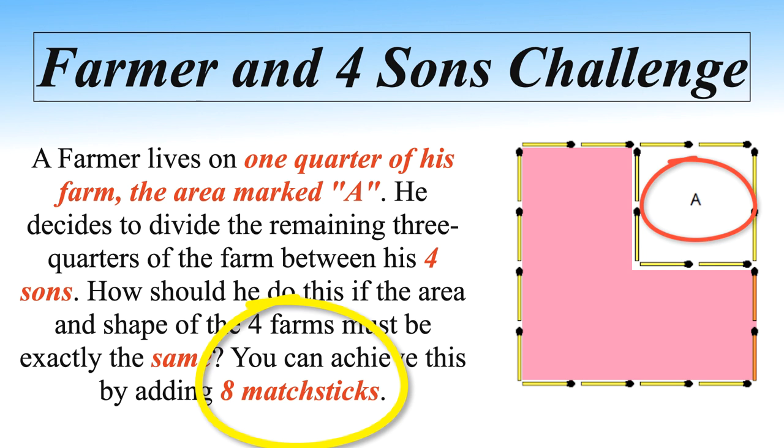Let me repeat the puzzle. A farmer lives on one quarter of his farm, the area marked A. He decides to divide the remaining three quarters of the farm between his four sons. How should he do this if the area and shape of the four farms must be exactly the same? The condition is you have to achieve this by adding eight matchsticks, not less or more than that.